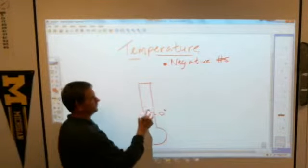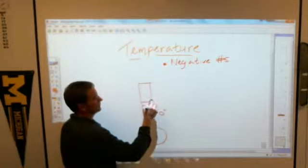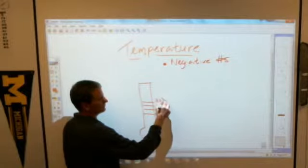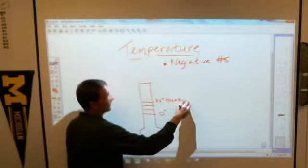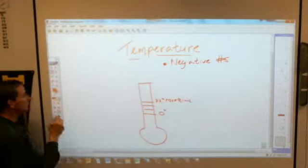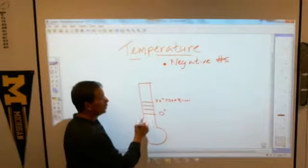we have zero degrees there. Water freezes at, let's go here 10, 20, 30. Right about here at 32 degrees is freezing. But, and then boiling is way up here somewhere, but what we're looking at a little bit more is what happens when the numbers, when the temperature drops below zero.